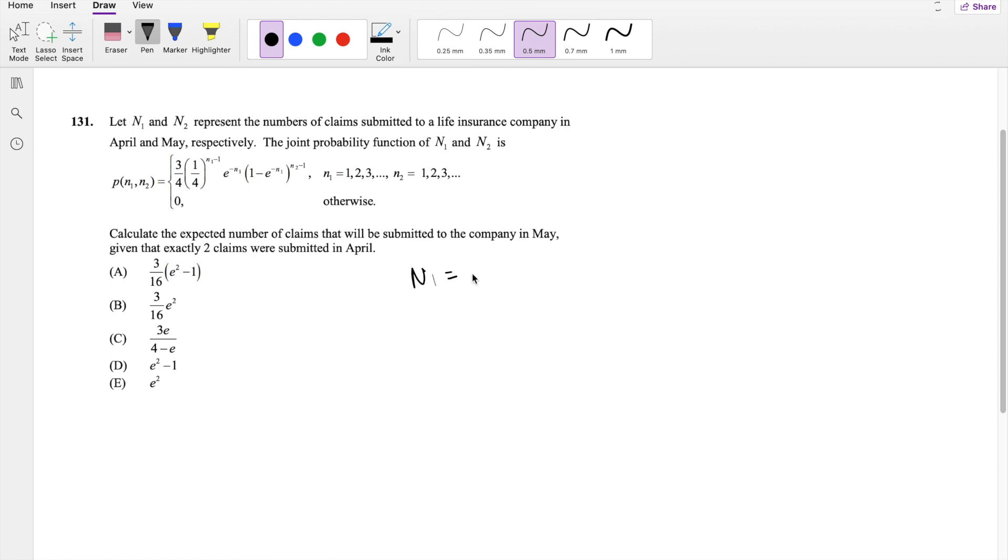So they tell you that N1 is equal to April and N2 is equal to May. And then they ask you, calculate the expected number of claims that will be submitted to the company in May, so that's N2, given that exactly two claims were filed in April.